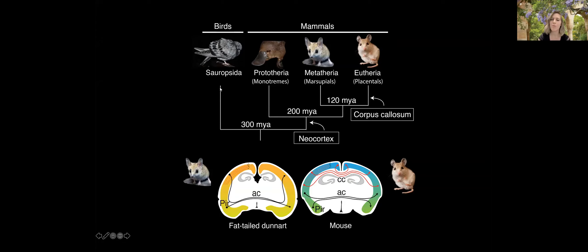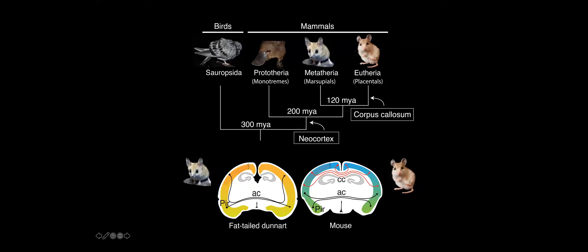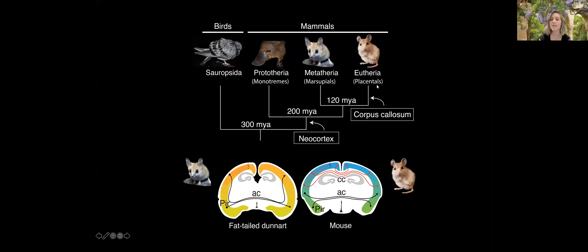Only mammals have a neocortex; birds have somewhat homologous structures that are difficult to compare in terms of function and transcriptional identity. All mammals have a quite comparable neocortex but with key differences. The mammalian groups are: Eutheria — also known as placentals, which includes humans, rodents, dogs, and cats — and in Australia we're very familiar with marsupials, which includes almost all of our native fauna: kangaroos, koalas, anything with a pouch.